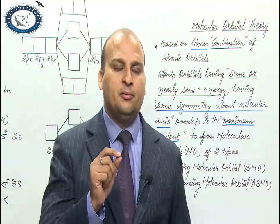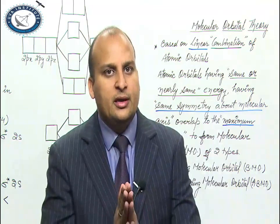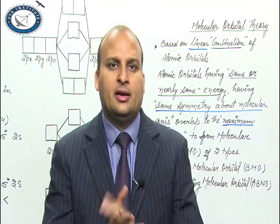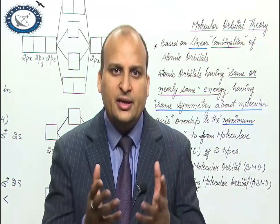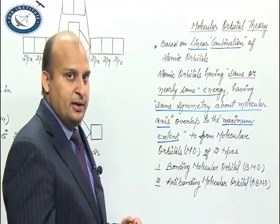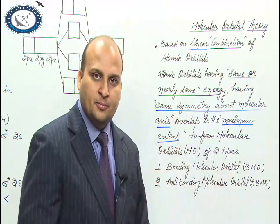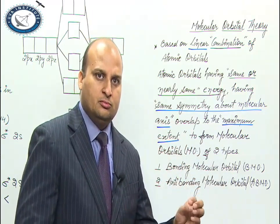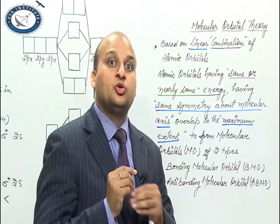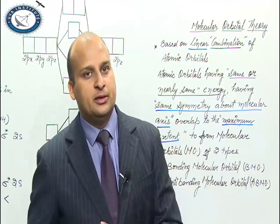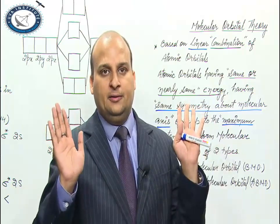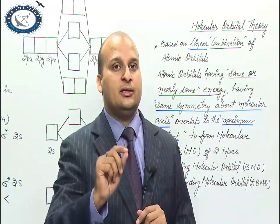I always explain bonding like this: it is a random process, like friendship between boys. When two boys meet, they don't instantly become friends — maybe they become friends (bonding molecular orbital), or maybe not (anti-bonding molecular orbital). So when two atoms meet, we have two options: either a bond forms or it doesn't — fifty-fifty percent probability. This is called linear combination.